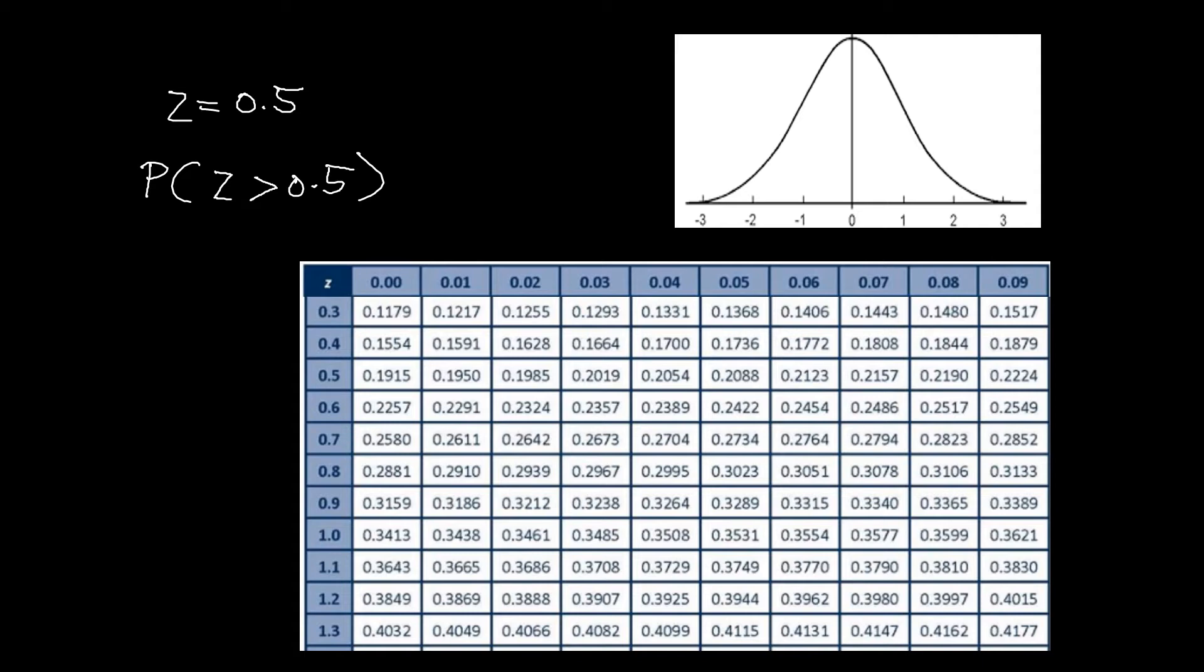Now, locating first our area on the 0.5, we have that one here, which is 0.1915. So if we are going to illustrate that out, we have 0.5 somewhere here. And since the problem says it's greater than, you will be shading towards the right side because your z values that are greater than 0.5 are located on the right side.